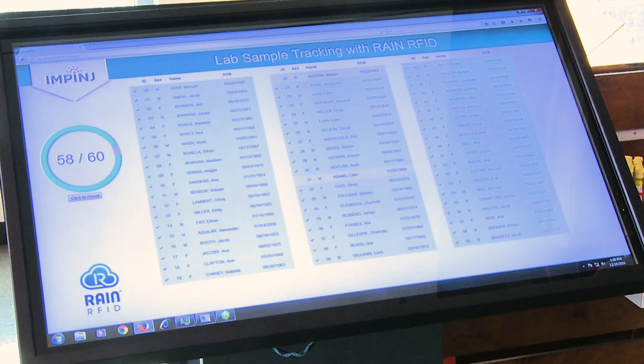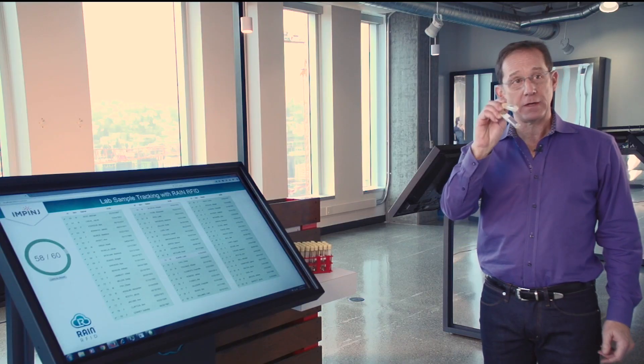You can see that very quickly it identifies 58 out of 60 of those samples, and it hasn't shown that the two that I have in my hand are still missing.